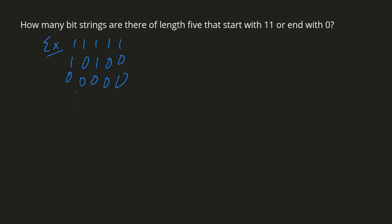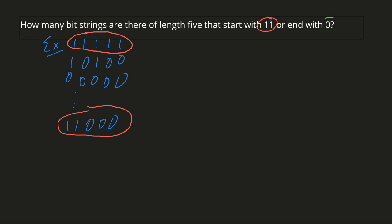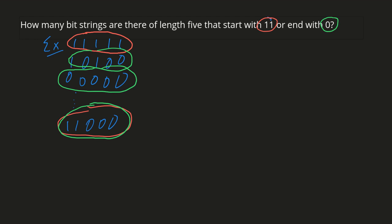Bit strings that start with 1,1 would be, for example, 1,1,1,1,1, or another one would be 1,1,0,0,0. That would be another bit string that started with 1,1. Bit strings that end with 0 — well, those last examples are bit strings that end with 0. In particular, that last one has a red circle and a green circle, which means it begins with 1,1 and ends with 0, which is something we have to keep in mind when working this problem out.